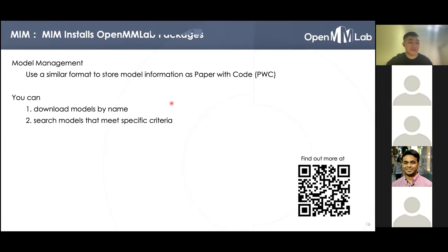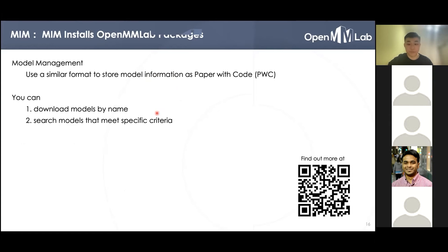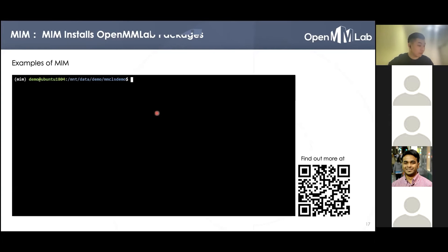Some of you might also notice that OpenMMLab projects provide a meta file containing information about all the models they released. We use the same contract as Papers With Code, so PWC could easily import all projects — they now manually import MMDetection. In MIME, we also provide an interface to access this information and help to download and search models for specific criteria. Here is a full example of MIME — you can also scan the QR code to visit the GitHub site of MIME.